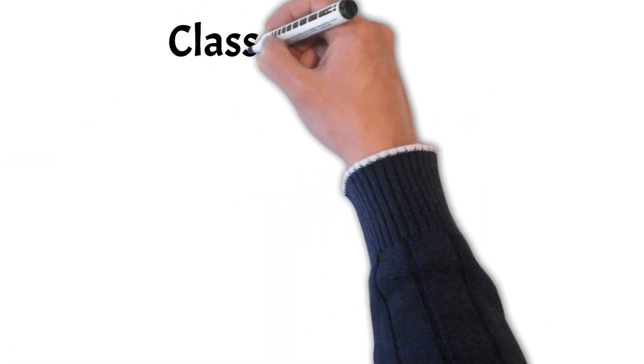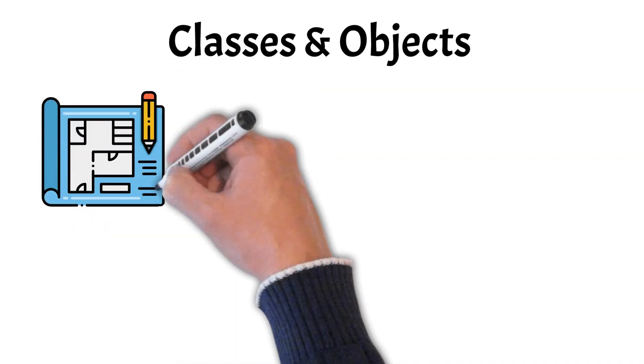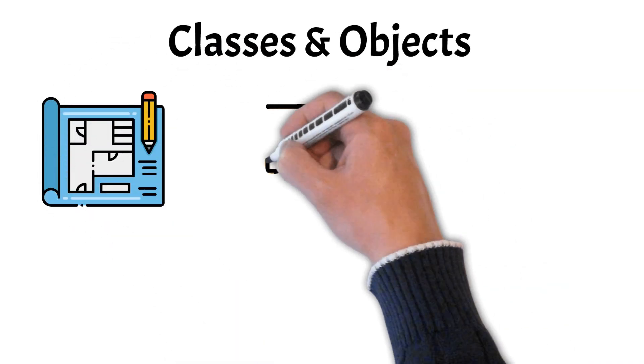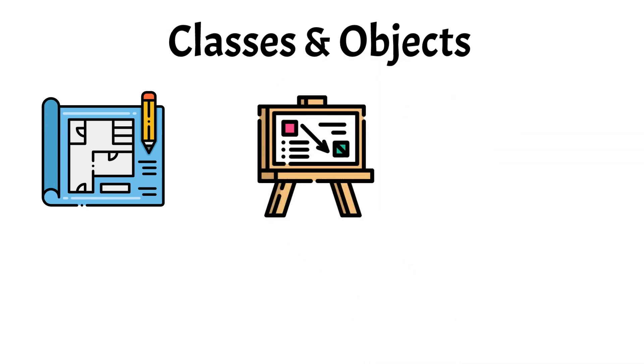First, we have classes and objects. Classes and objects are core components of object-oriented programming. A class serves as a blueprint or template for creating objects. It defines the properties and behaviors that the objects created from it will have. An object is an instance of a class.